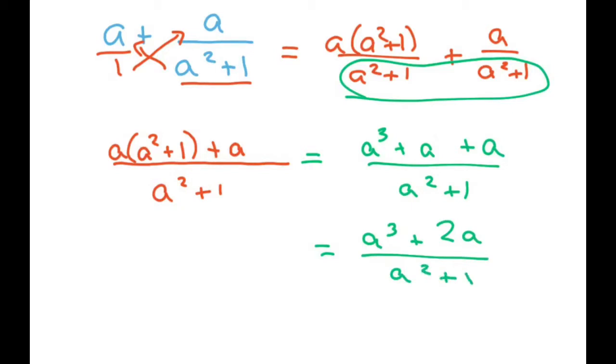And if you want, you can factor out an a here on this one and get a times a squared plus 2 divided by a squared plus 1. And that's kind of factored out for you.